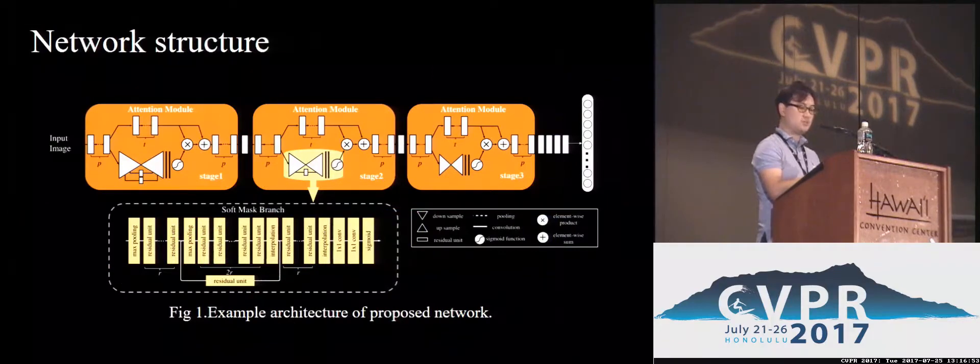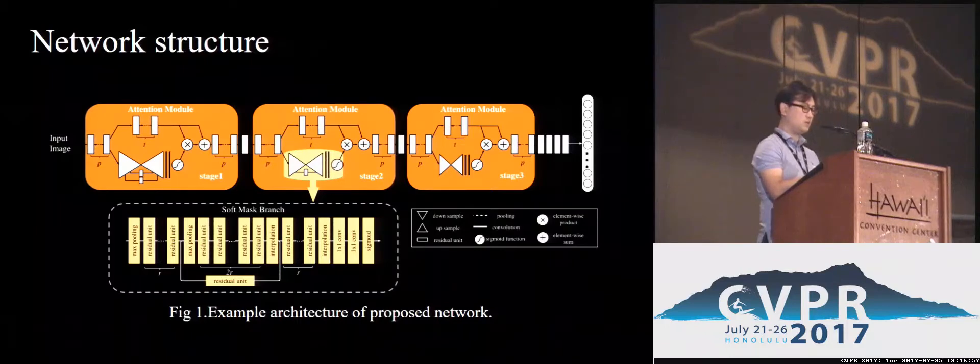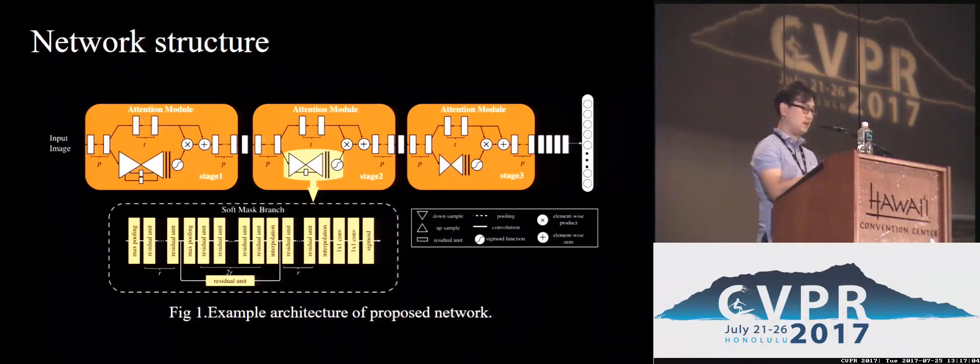Our Residual Attention Network is built by stacking attention modules. Each attention module is composed of trunk branch and soft mask branch. The trunk branch performs feature processing and can be any state-of-art network structure.